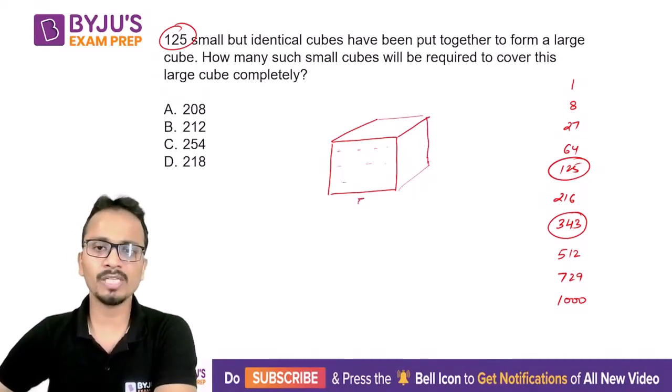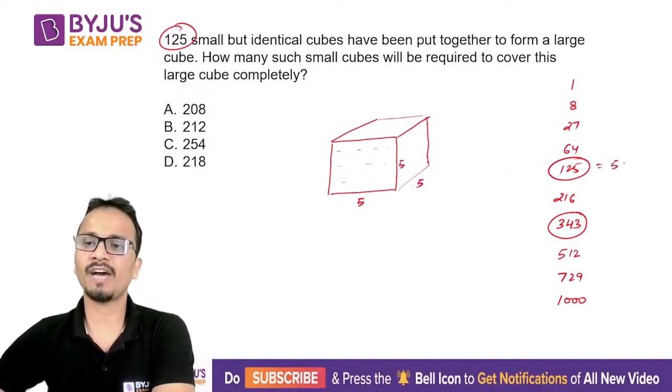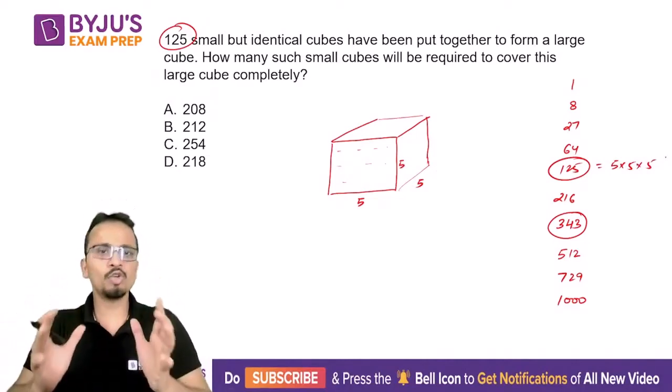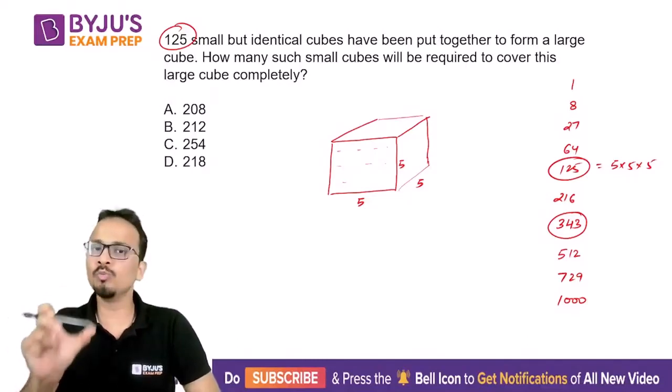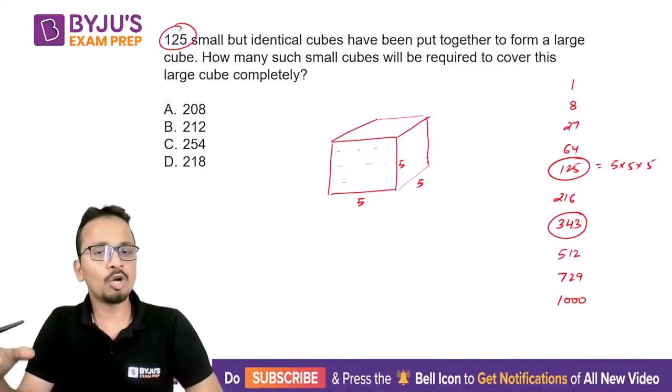So these are small pieces inside. Now 125 is 5×5×5, so the resulting bigger cube, the large cube that is formed, will have 5 cubes along the length, 5 along the width, and 5 along the height.